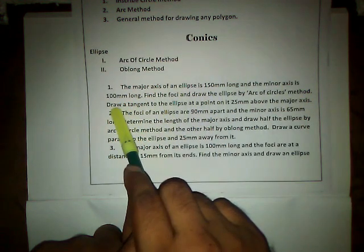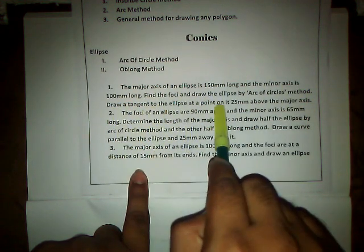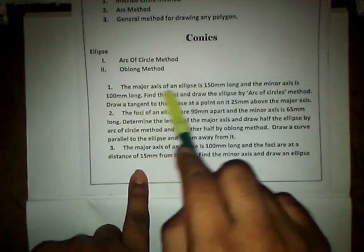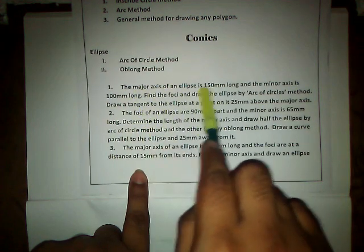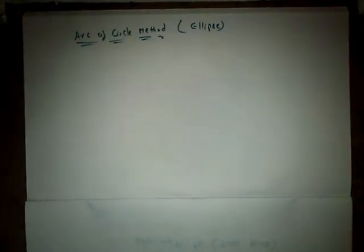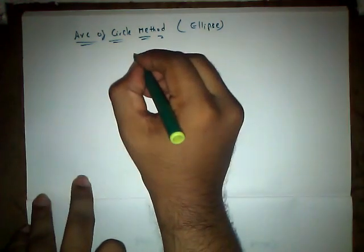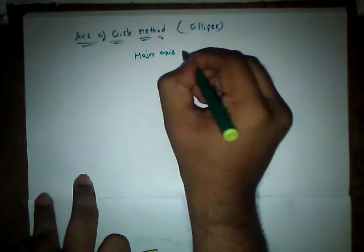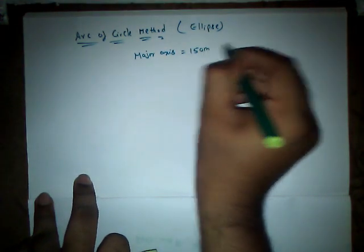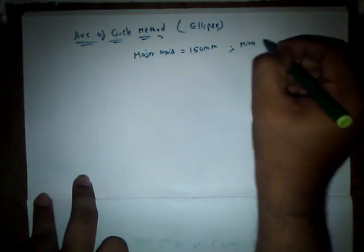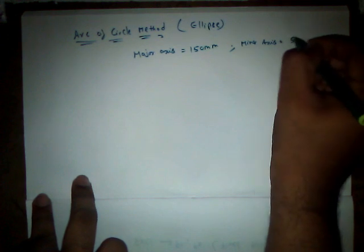And in the same question he is asking us to draw a tangent to the ellipse at a point on it 25mm above the major axis. So let us construct the curve. We have the major axis of the ellipse is 150mm and minor axis of the ellipse is equal to 100mm long. Here we have major axis of the ellipse 150mm and minor axis of the ellipse 100mm.